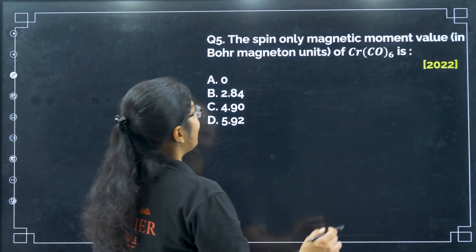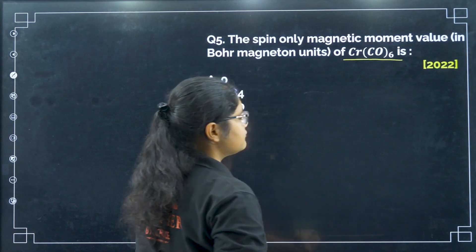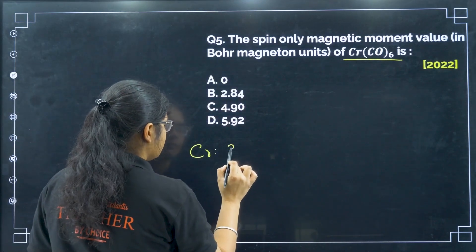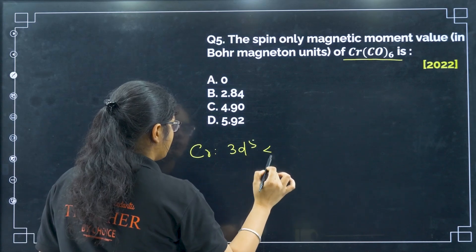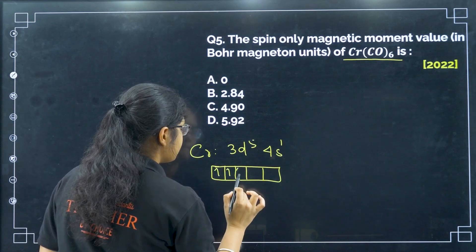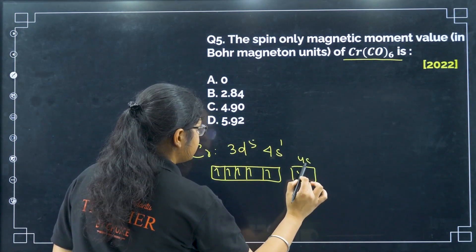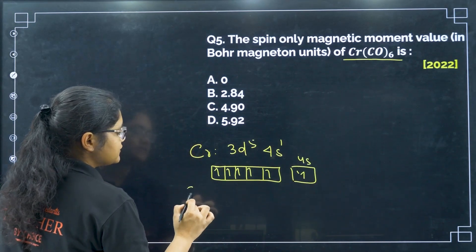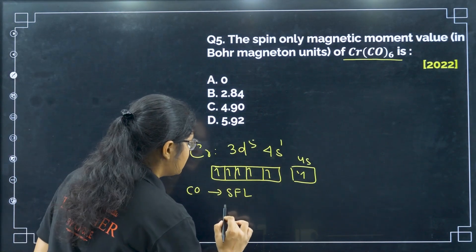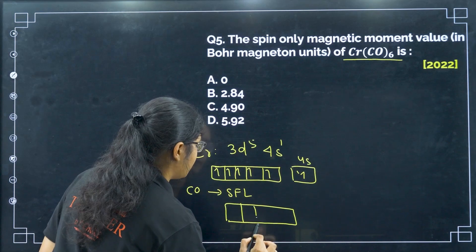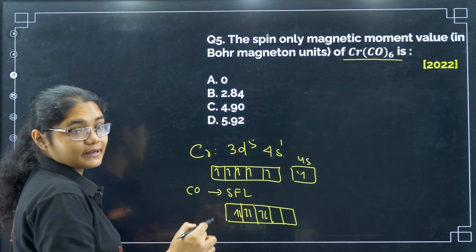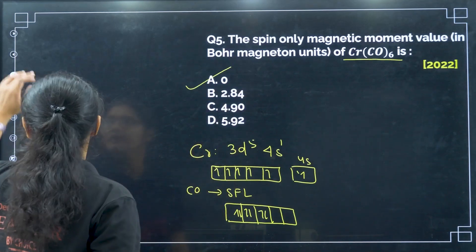Next, the spin-only magnetic moment value in the given compound. Chromium here is in 0 oxidation state. The electronic configuration of chromium is 3d5 4s1. CO is a strong field ligand, so there will be pairing of electrons. All 6 electrons will get paired up, so the total magnetic moment is 0. That is why option A.